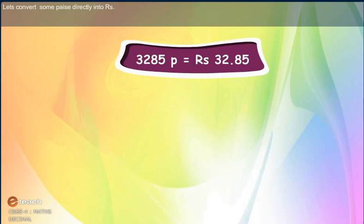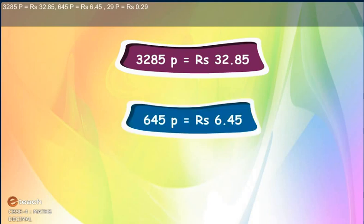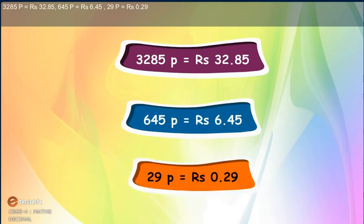Let's convert some paise directly into rupees. 3,285 paise equals Rs. 32.85. 645 paise equals Rs. 6.45. 29 paise equals Rs. 0.29.